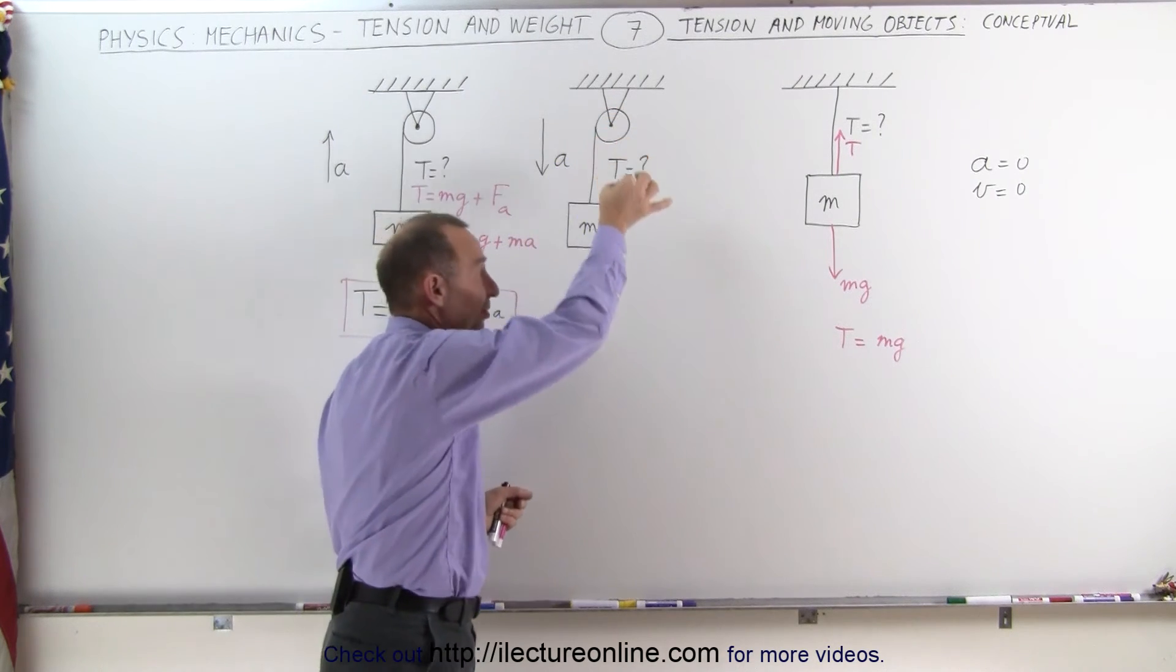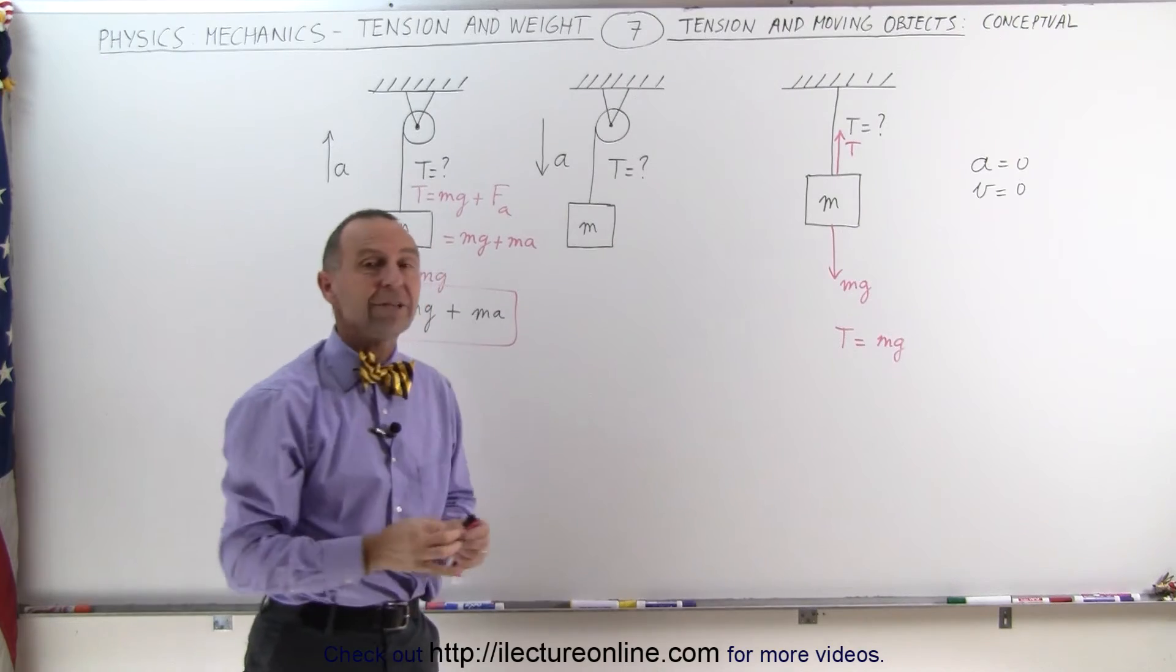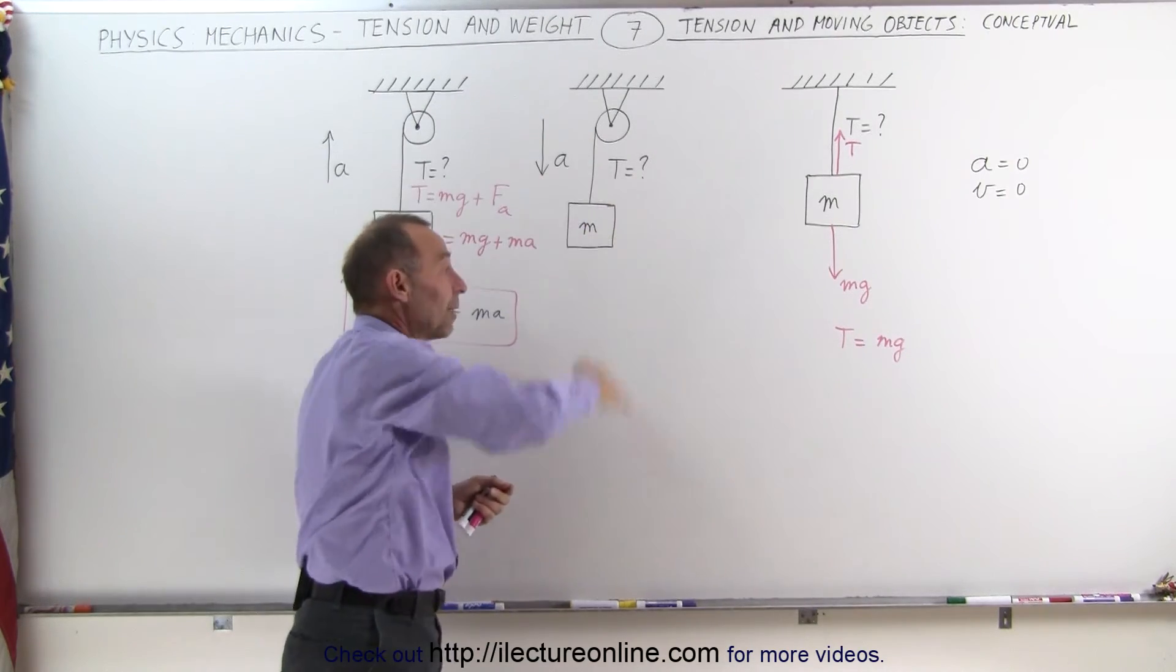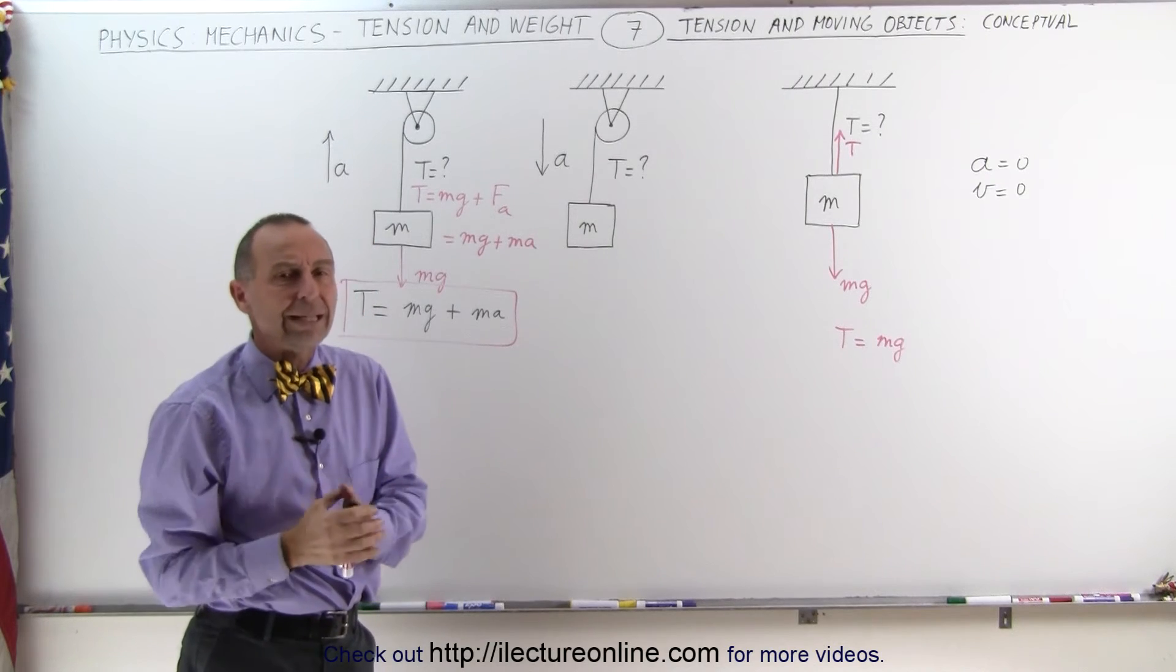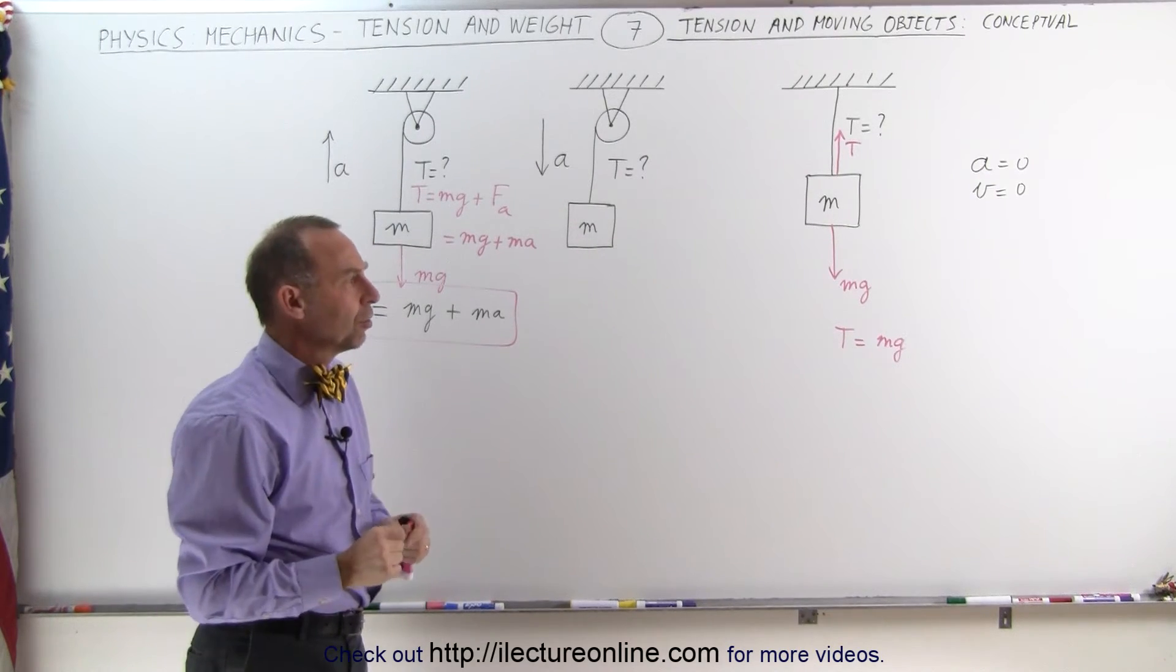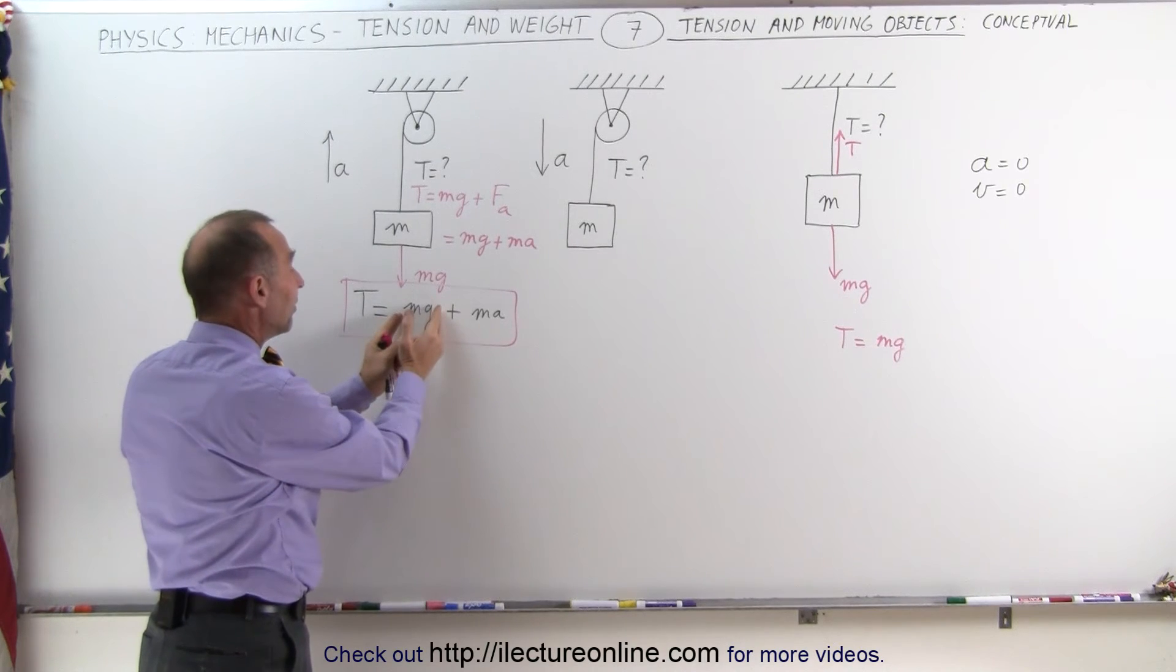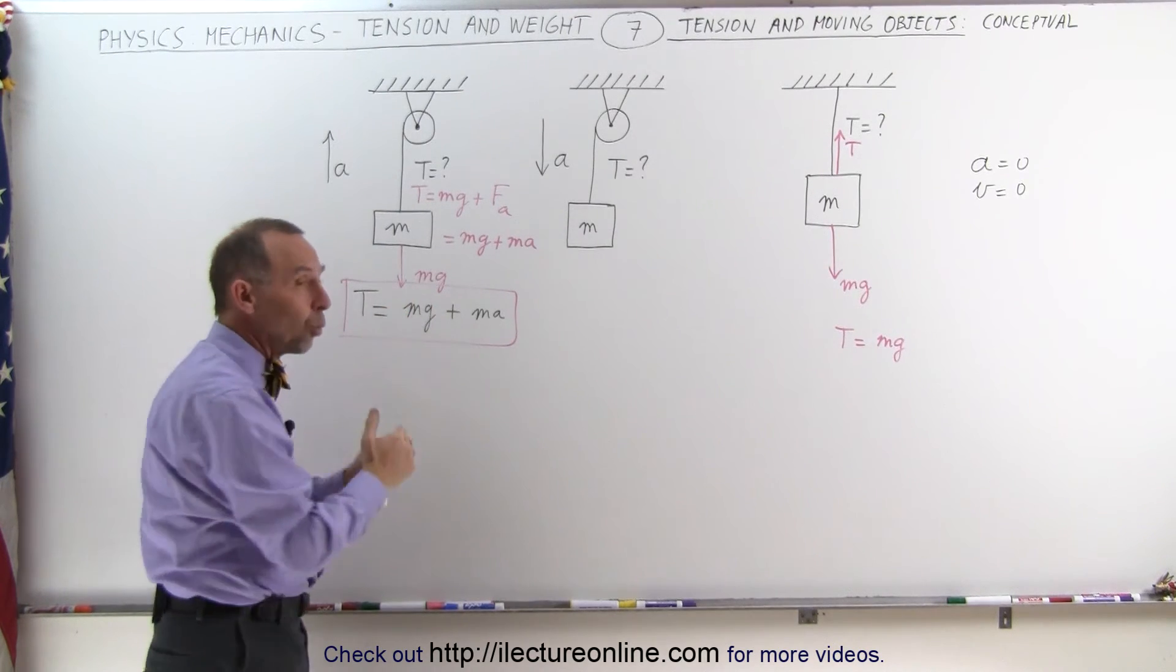In the end, if you allow the object to accelerate at the acceleration due to gravity, the tension required would be zero because essentially you can cut the string, the object would fall, and would accelerate A equals G.